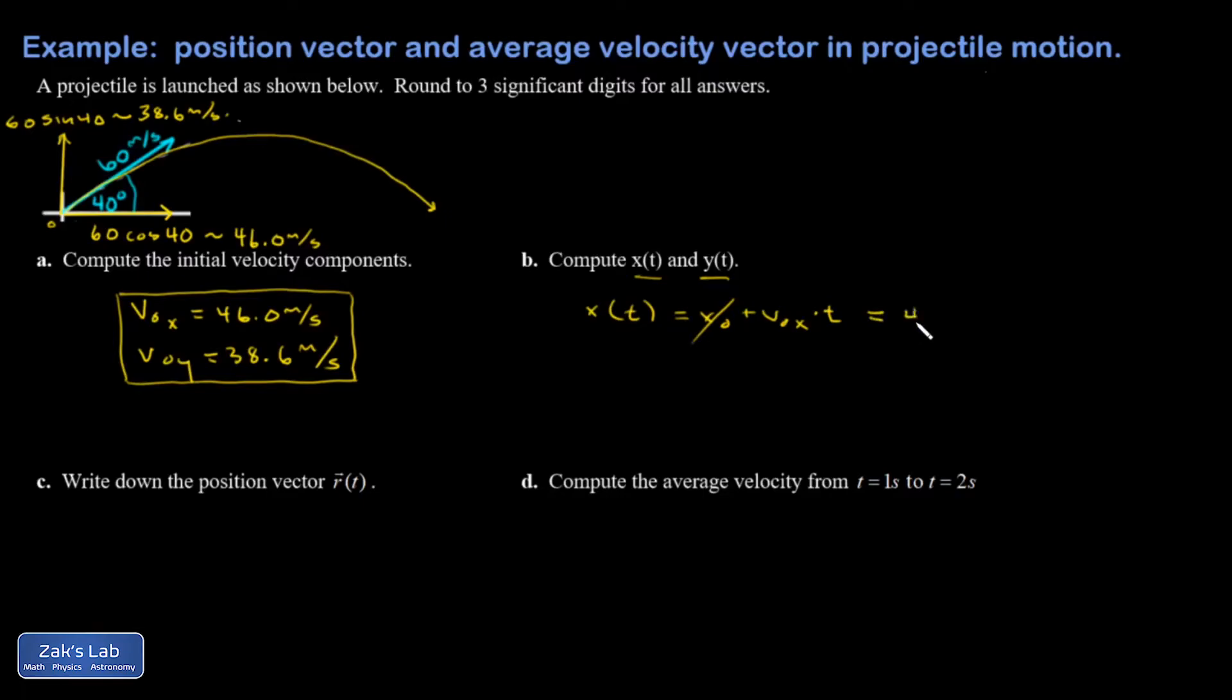And I end up with 46.0 times t. Y of t is going to be y naught, again zero, plus v naught y t minus one-half gt squared. So that gives me 38.6 t minus 4.9 t squared.